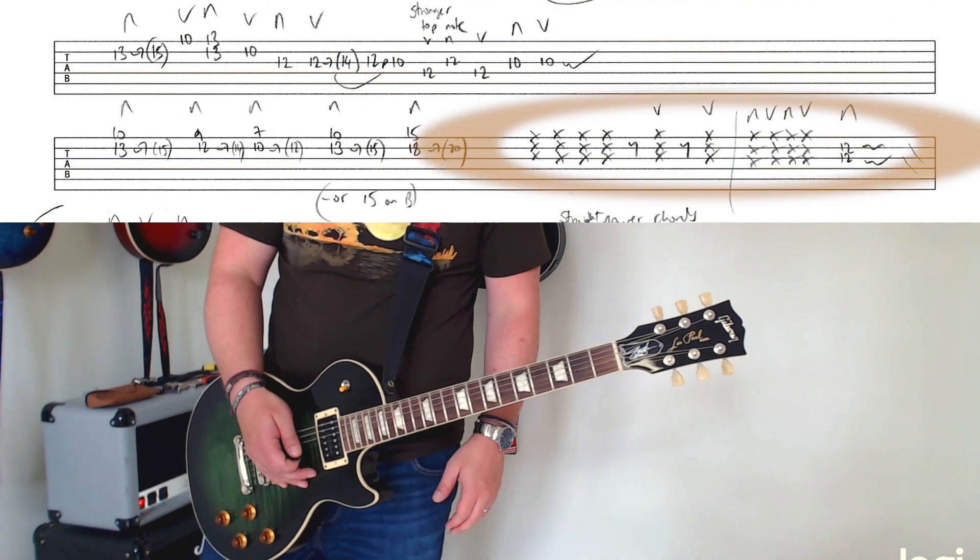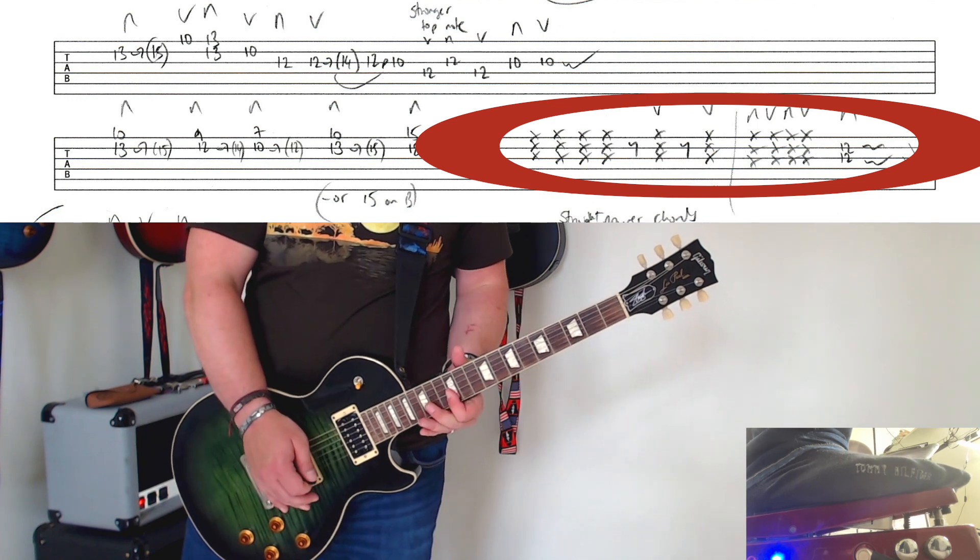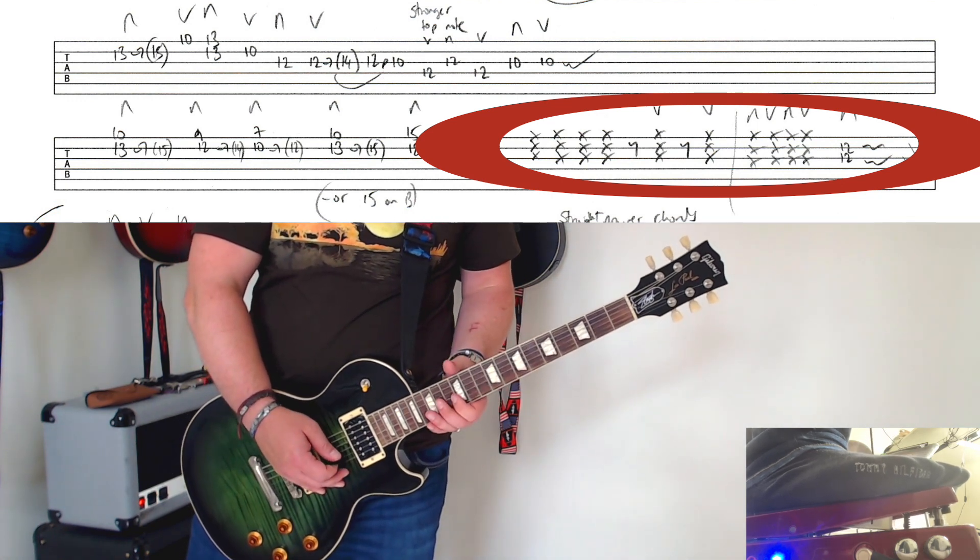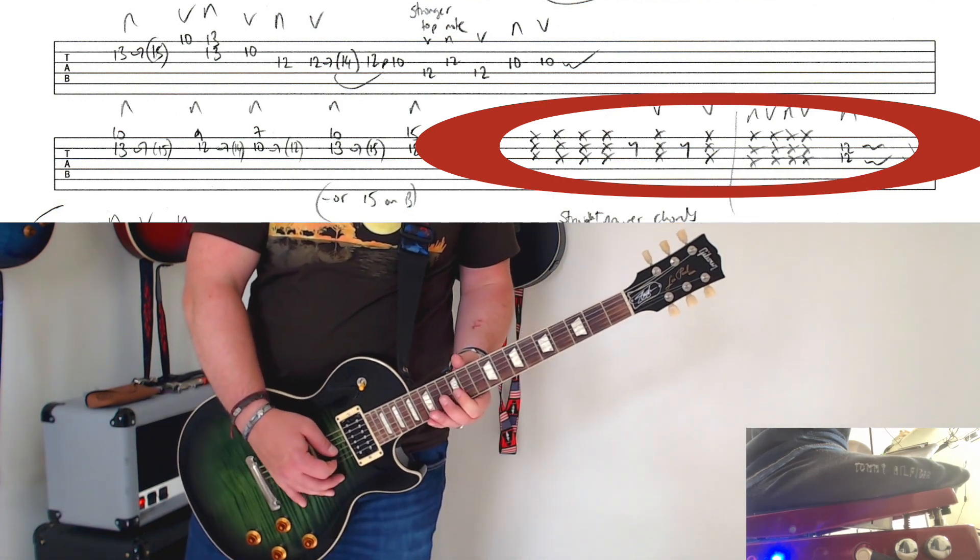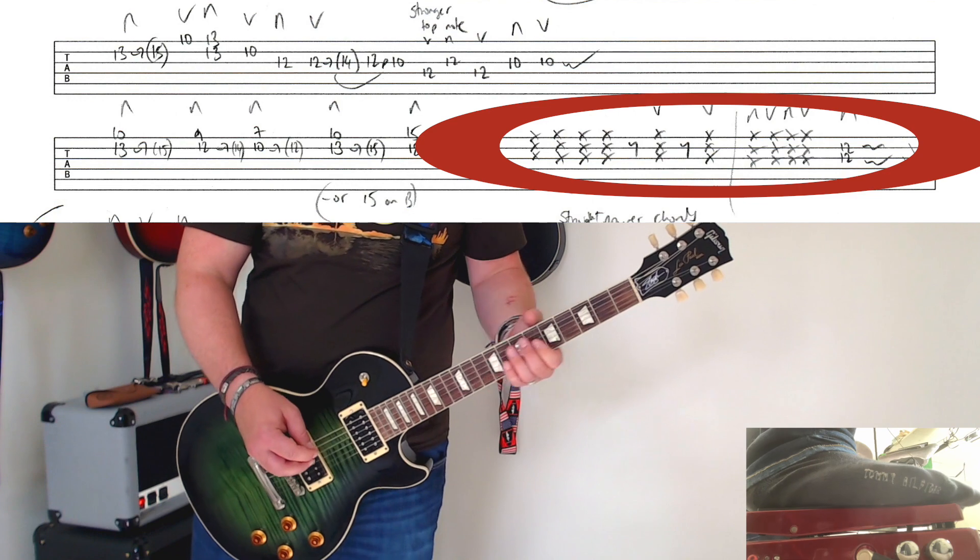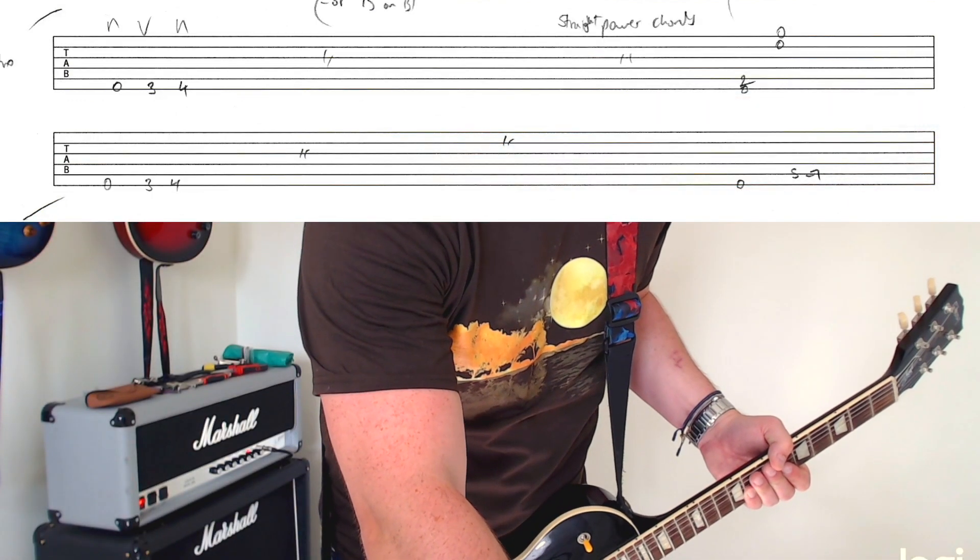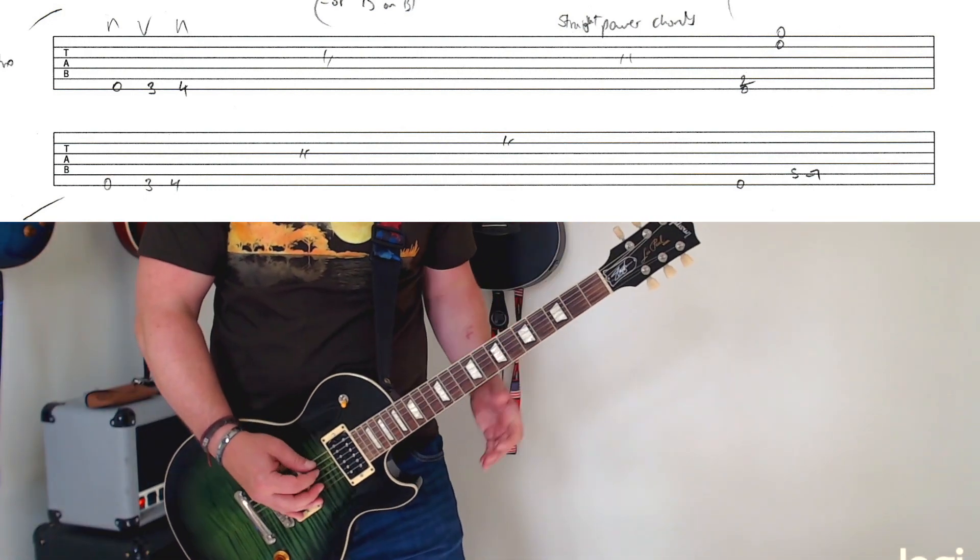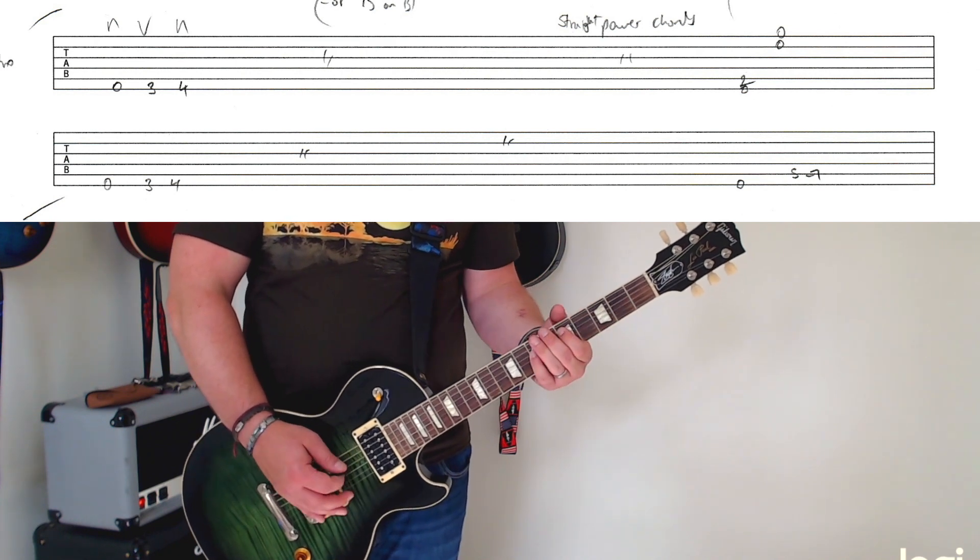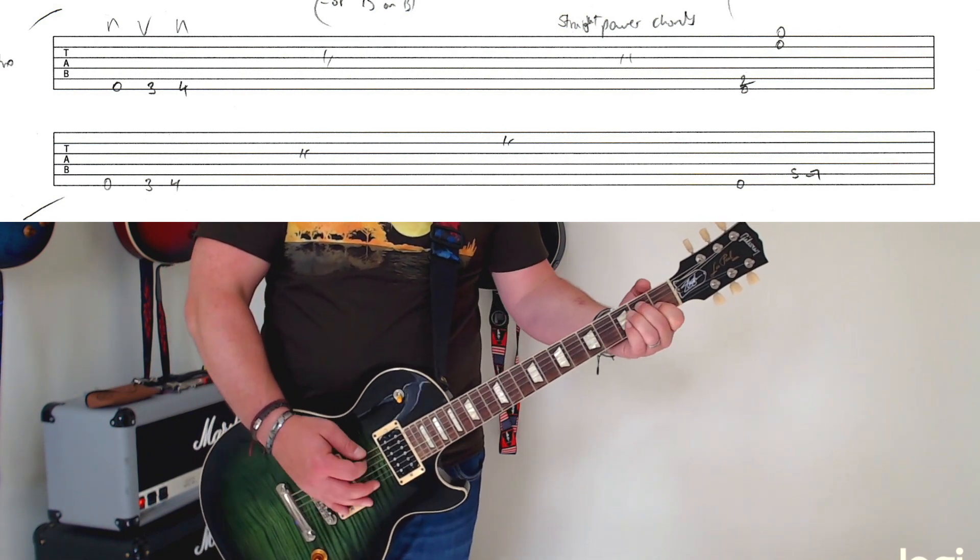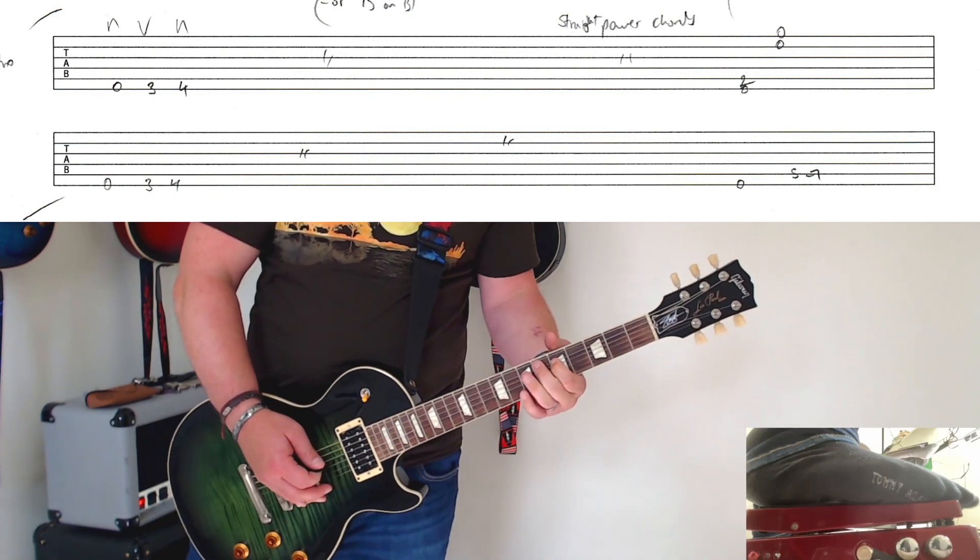And then we're going to do these intro kind of wah muted notes again. So just running through that again. 12th note slide down there. And then we're back into our intro riff again, which means that we're on the home straight now. There's very little that's different that we've done before, but we'll just play through it one time just because it's so much fun. So the intro riff.